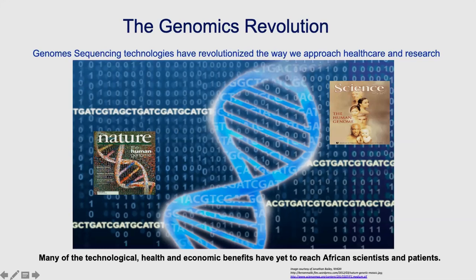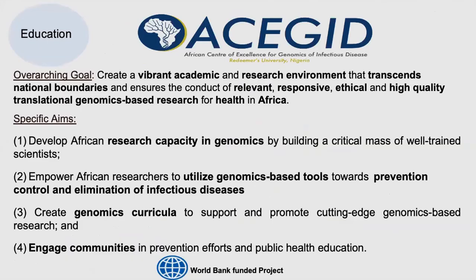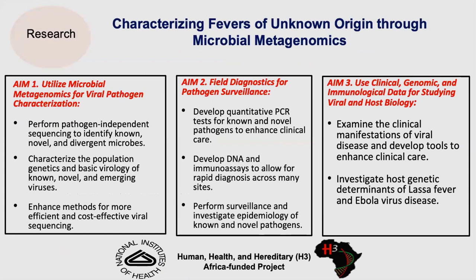That's one of the reasons why ACEGID was formed. ACEGID is a consortium based at Redeemer's University, with partners in Nigeria, hospitals across the country, and partners across Africa including Sierra Leone, Senegal, and Liberia. We also have partners in the US, such as the Broad Institute. The major aim of ACEGID is to create an environment where African researchers can carry out cutting-edge genomic research and use this to benefit the health of Africans.